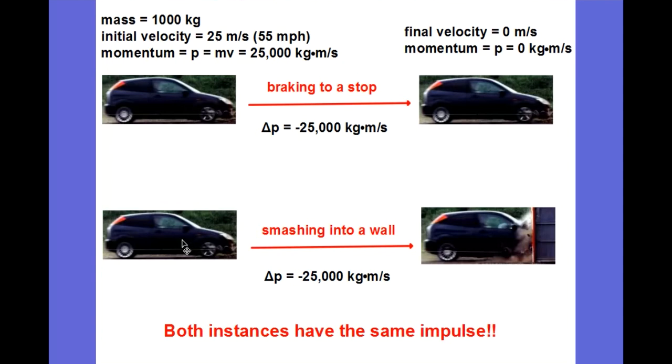Now let's take that same situation, a 1,000-kilogram car traveling at 55 miles per hour, and let's smash it into a wall. The end result is the same, the final velocity is zero, the final momentum is zero. So the zero minus 25,000 is still a change in momentum of negative 25,000 kilogram meters per second. Both instances have the same impulse.